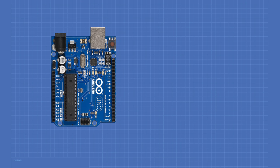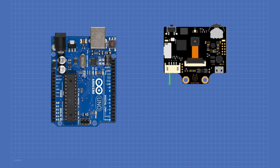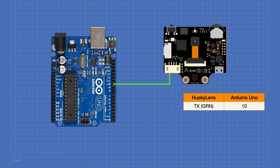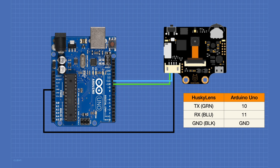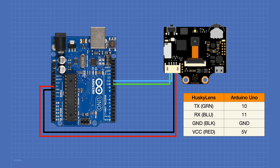For the UART experiment, connect the transmit or green lead from the Husky Lens to Arduino pin 10, and the receive or blue lead to Arduino IO pin 11. The Husky Lens ground (black lead) connects to the Arduino ground, and the VCC (red lead) connects to the Arduino's 5 volt output. This completes the UART wiring.